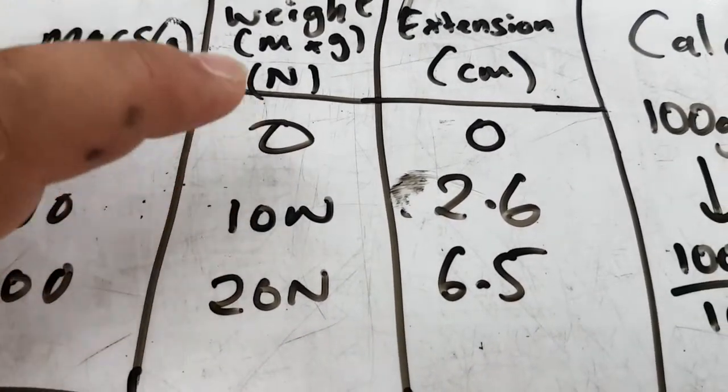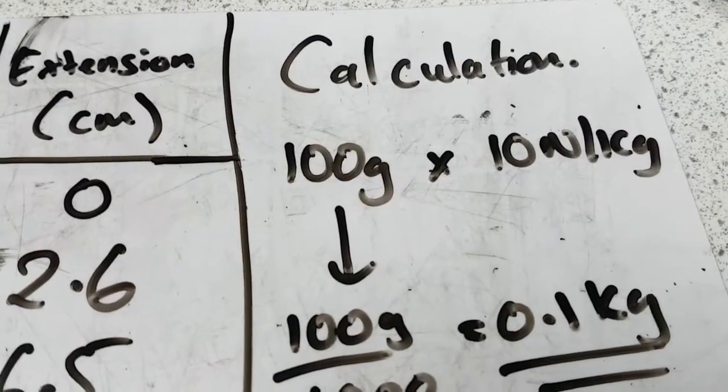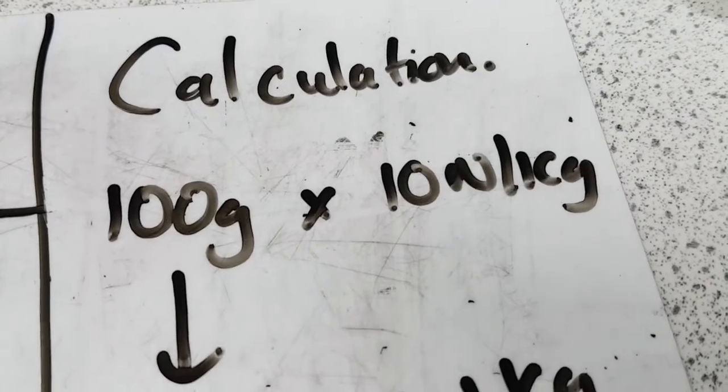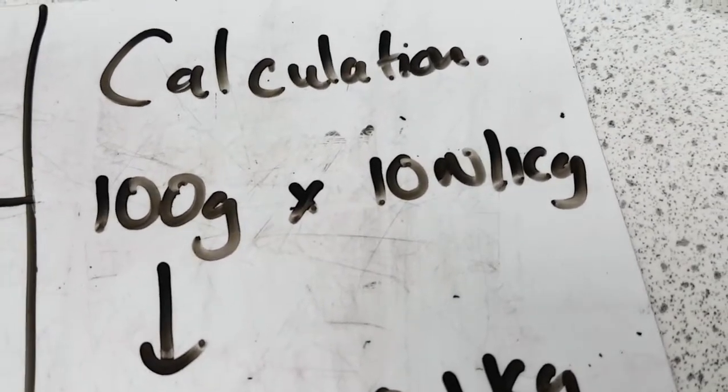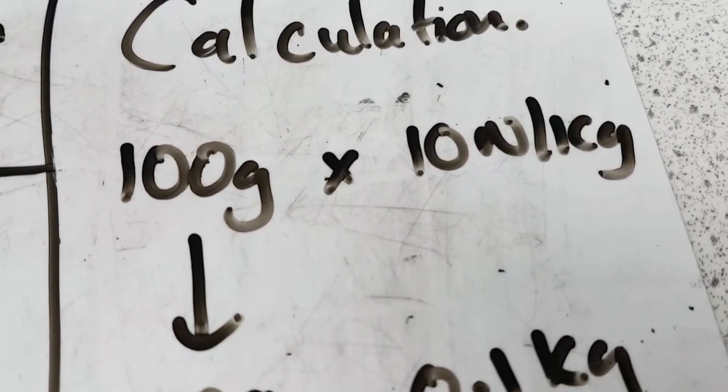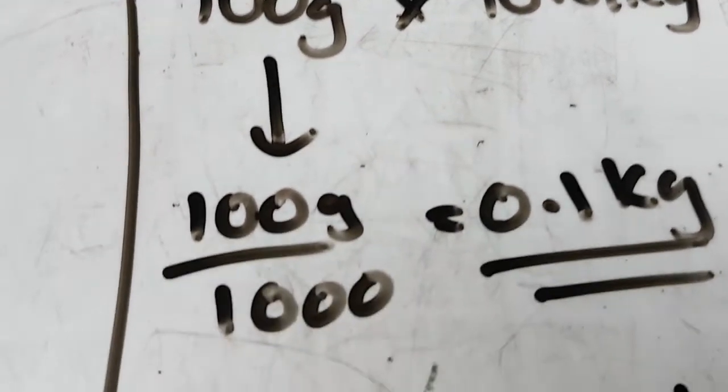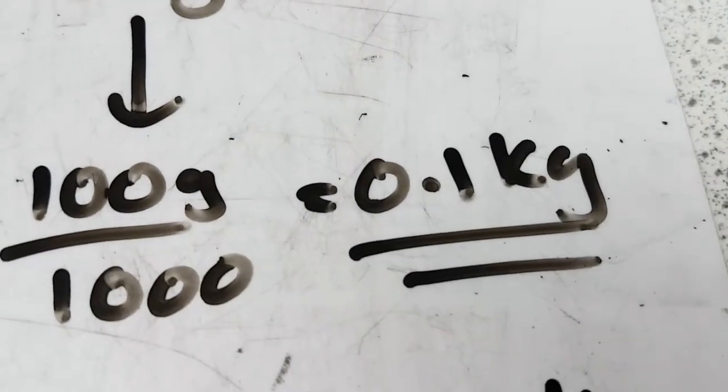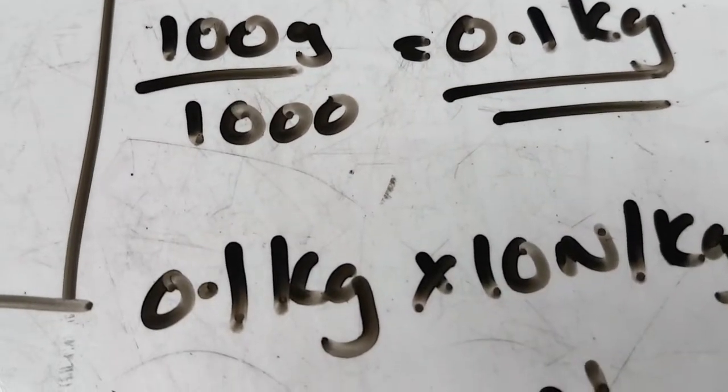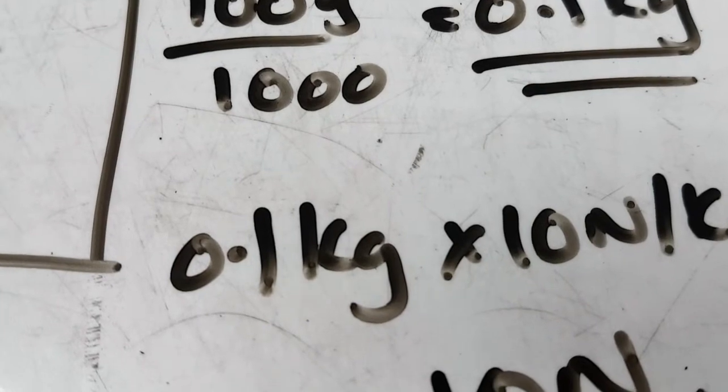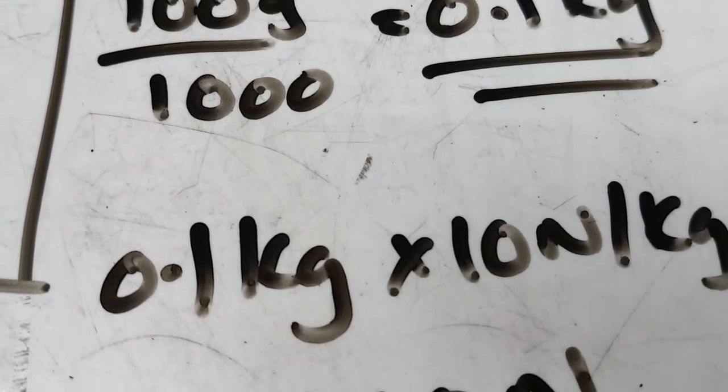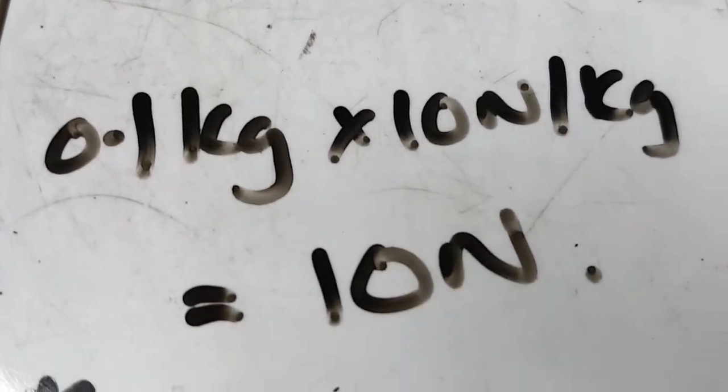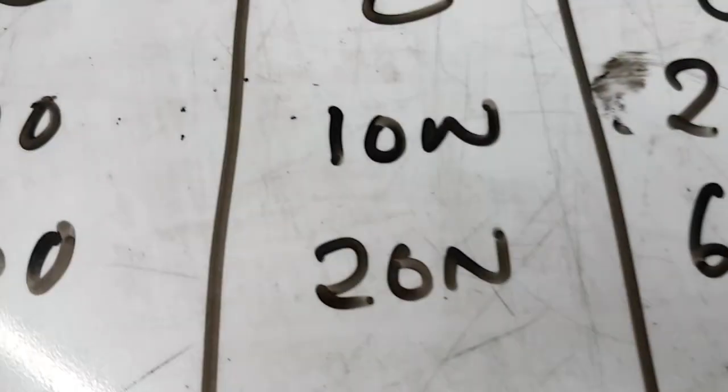Let me show you how to work out the weight of the mass. We're going to convert this mass into a weight in newtons. The basic calculation is you multiply your mass by gravity. So that's 100 grams multiplied by 10 newtons per kilogram. However, mass needs to be in kilograms. So we take that mass of 100 grams and divide it by 1000 to make it into kilograms, 0.1 kilograms. Then we multiply the mass by gravity: 0.1 kilograms times 10 newtons per kilogram gives us 1 newton.